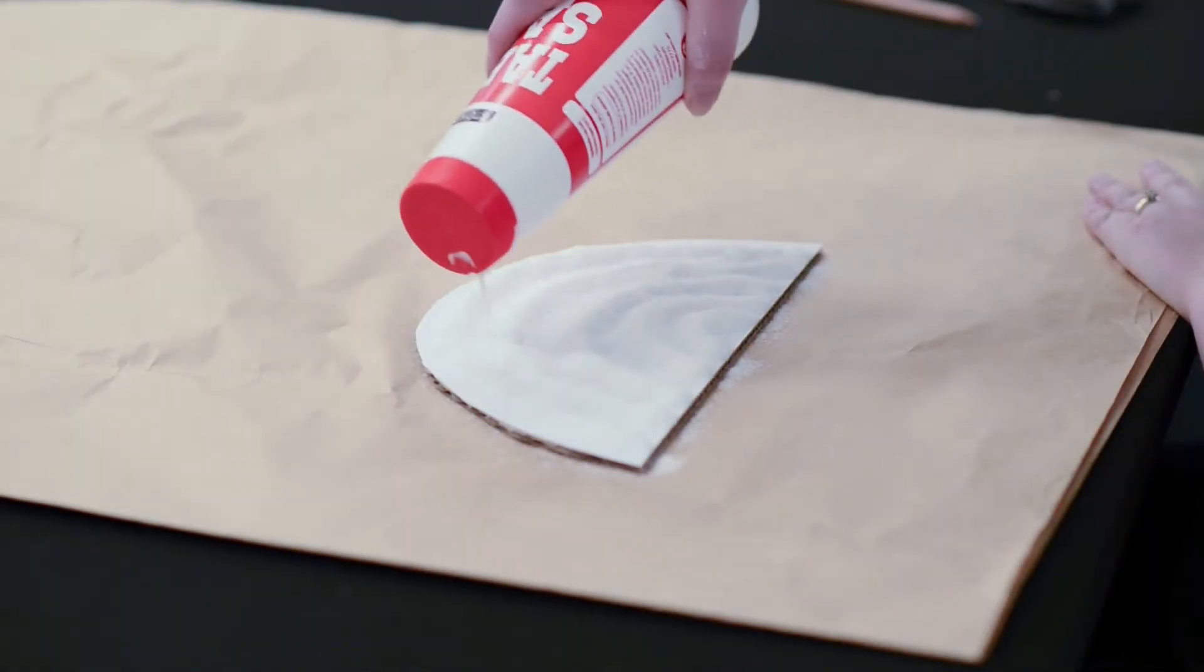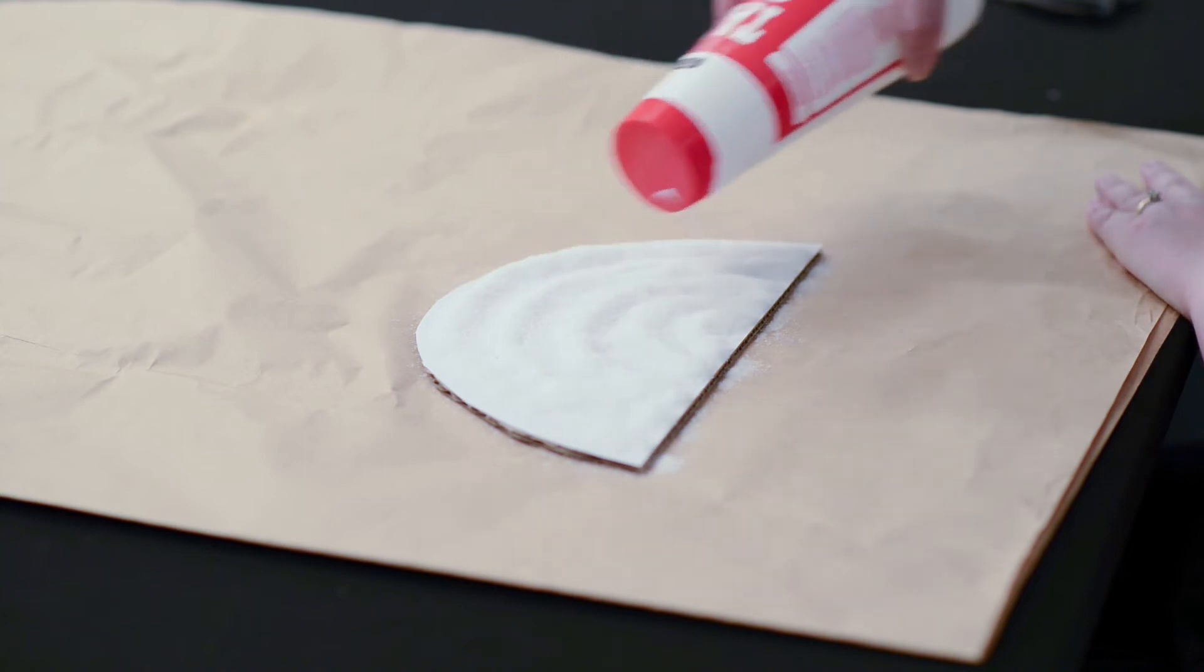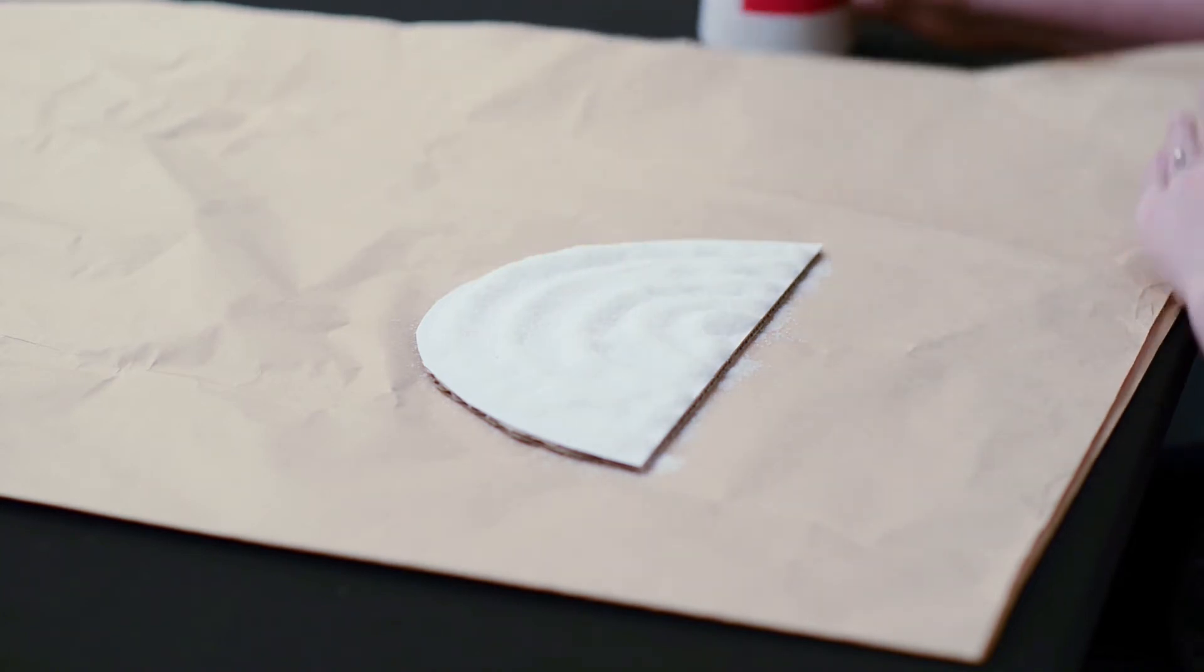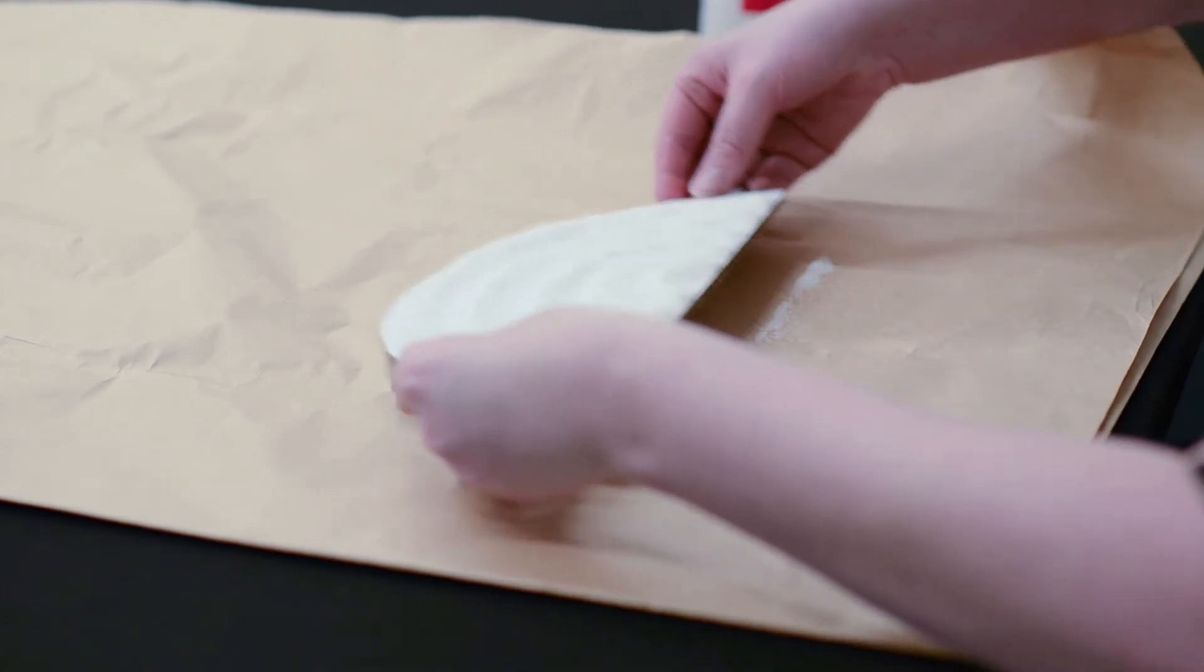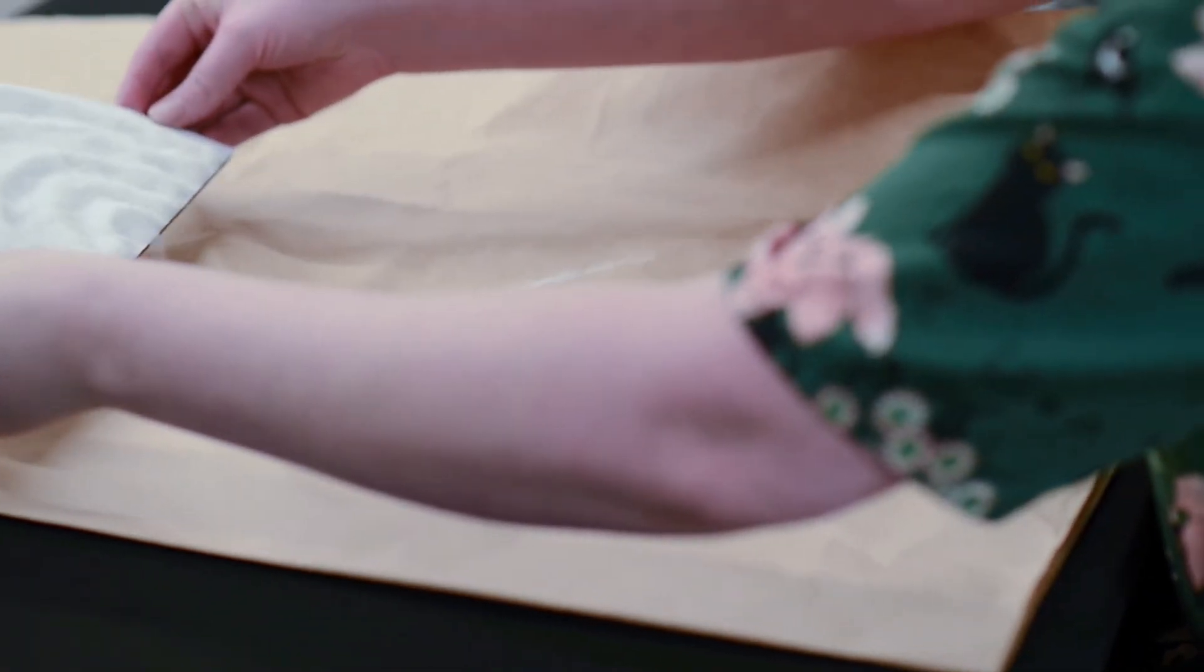Once you've generously covered all of your PVA glue with some salt, you want to really gently shake off that excess salt.